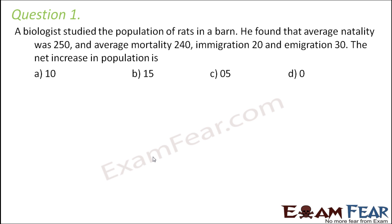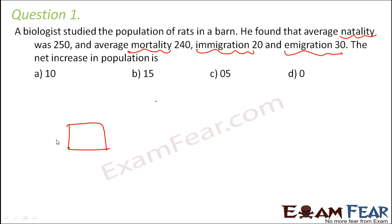Question number one: A biologist studied the population of rats in a barn. The average natality was 250, average mortality 240, immigration 20, and emigration 30. What is the net increase in population? We have four parameters here. Let us identify which ones add to the population and which ones subtract.